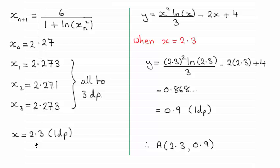So if we take x equals 2.3 and substitute it into our original equation, we can get y, and y to one decimal place then turns out to be 0.9.